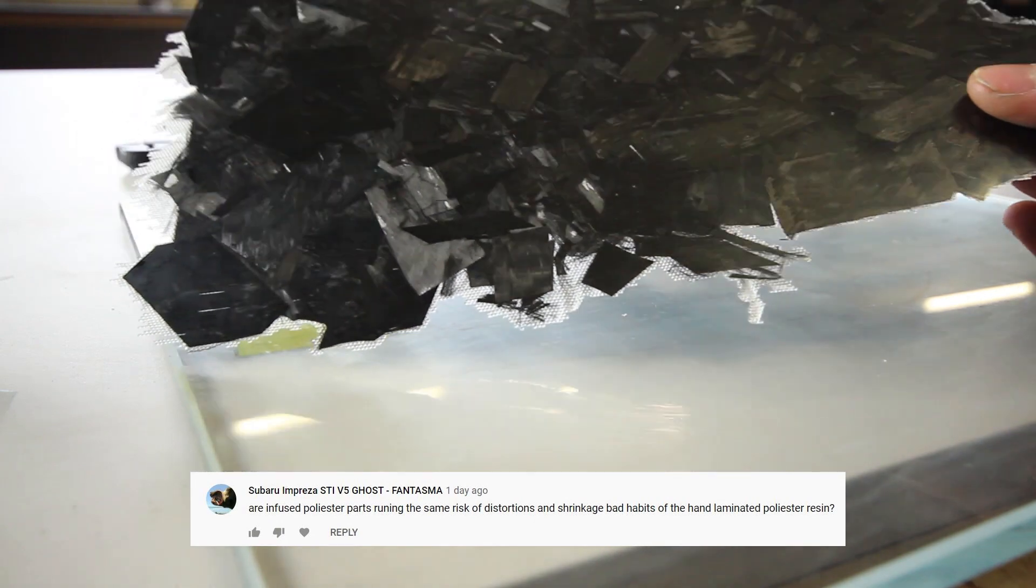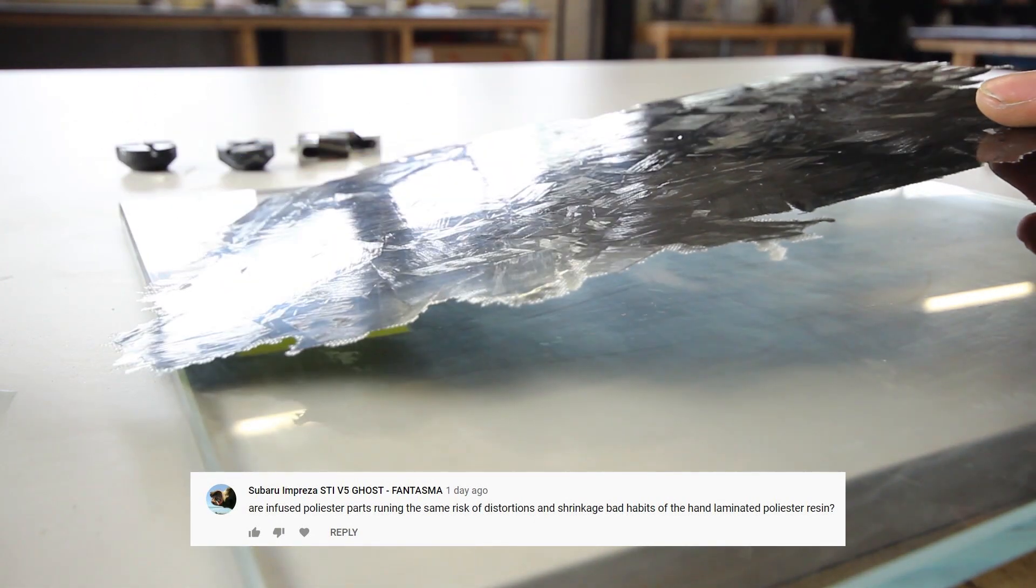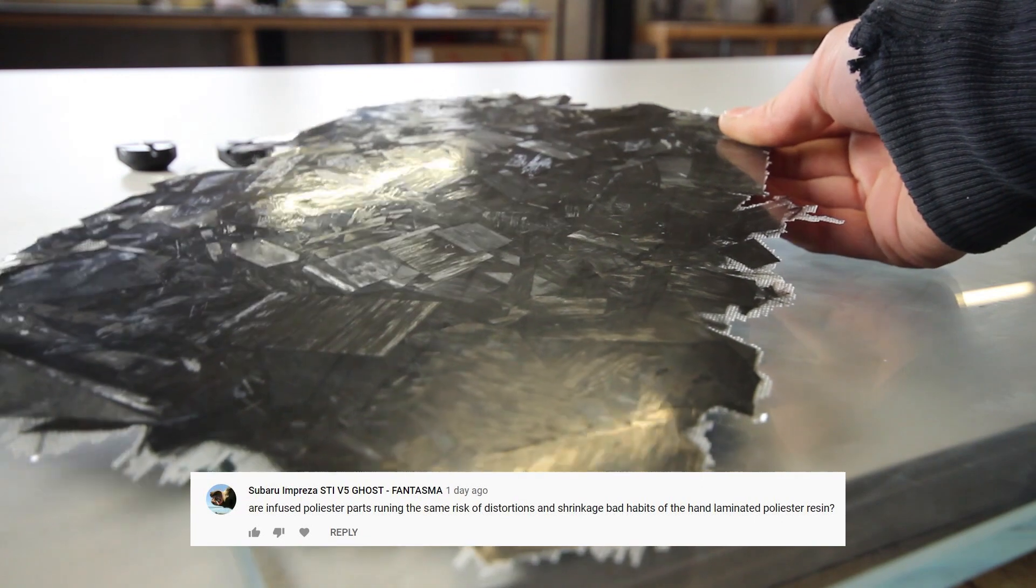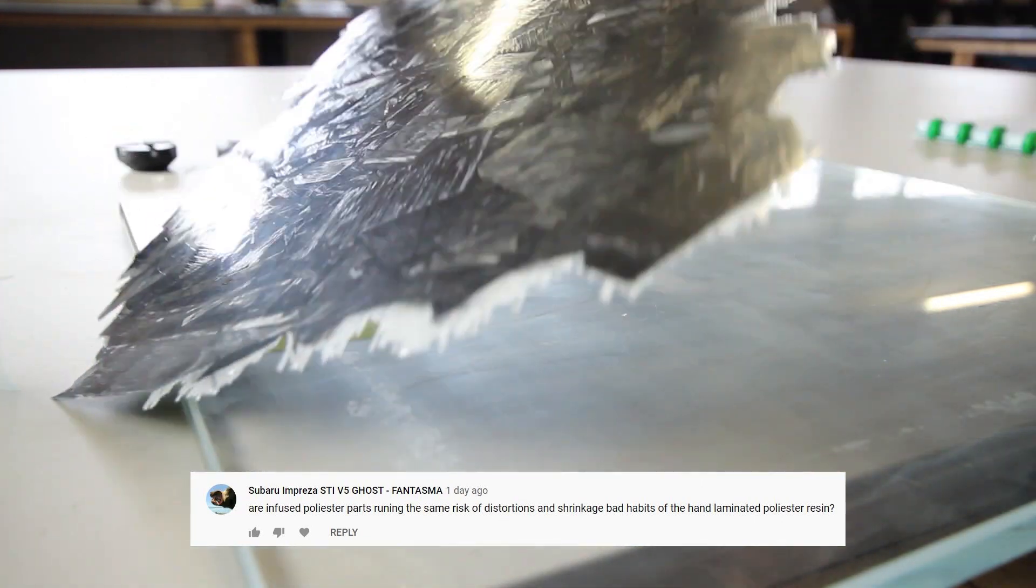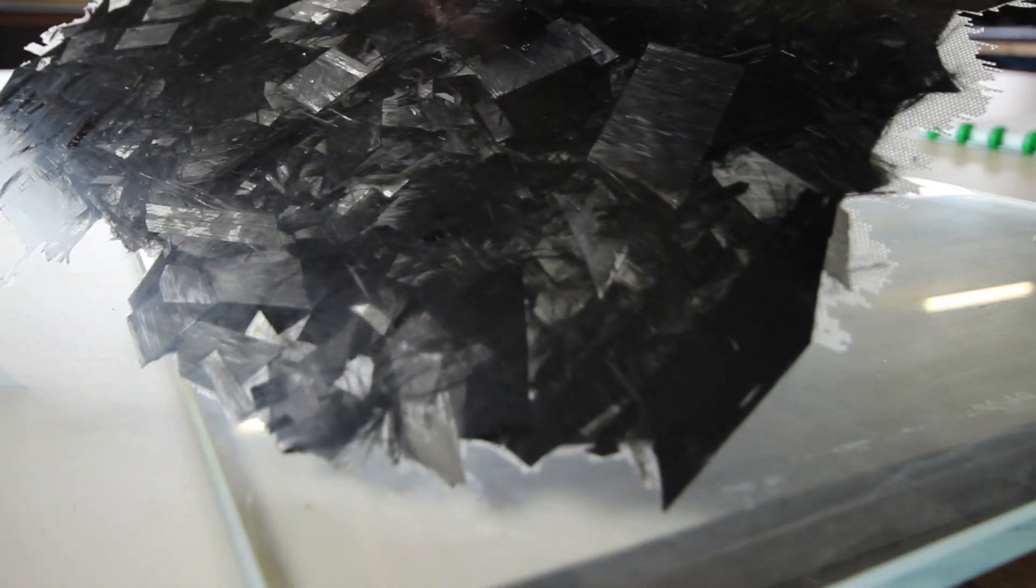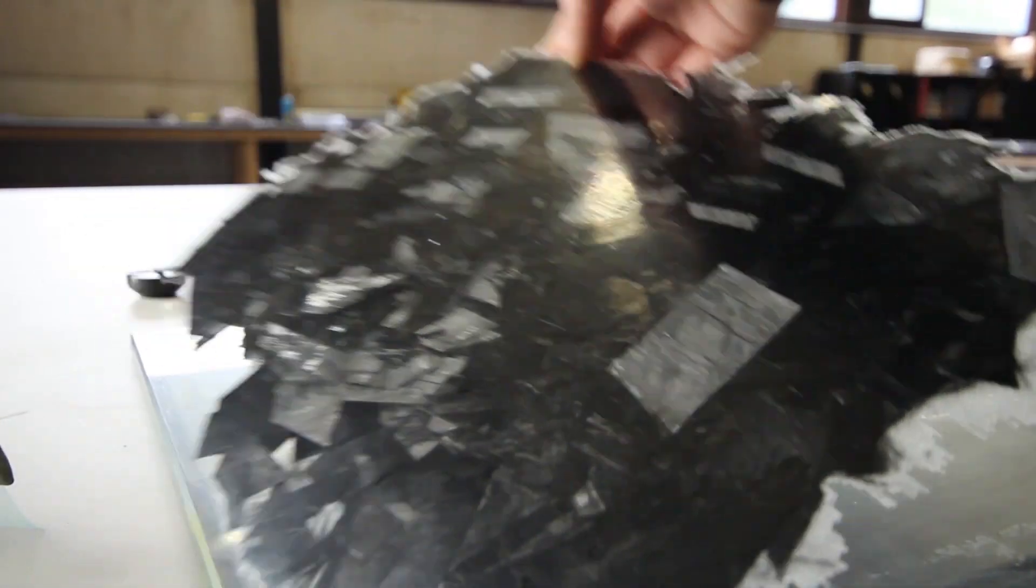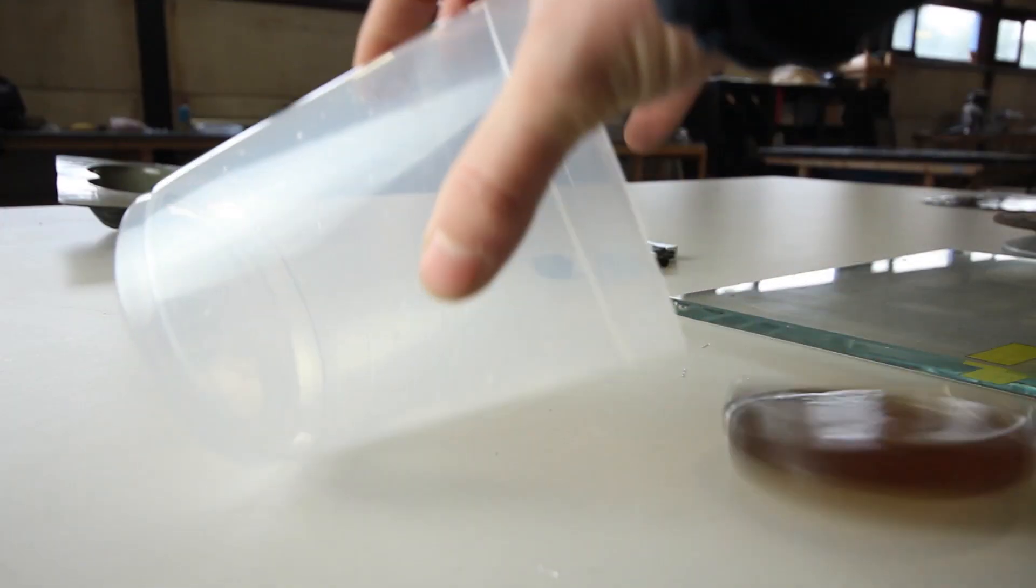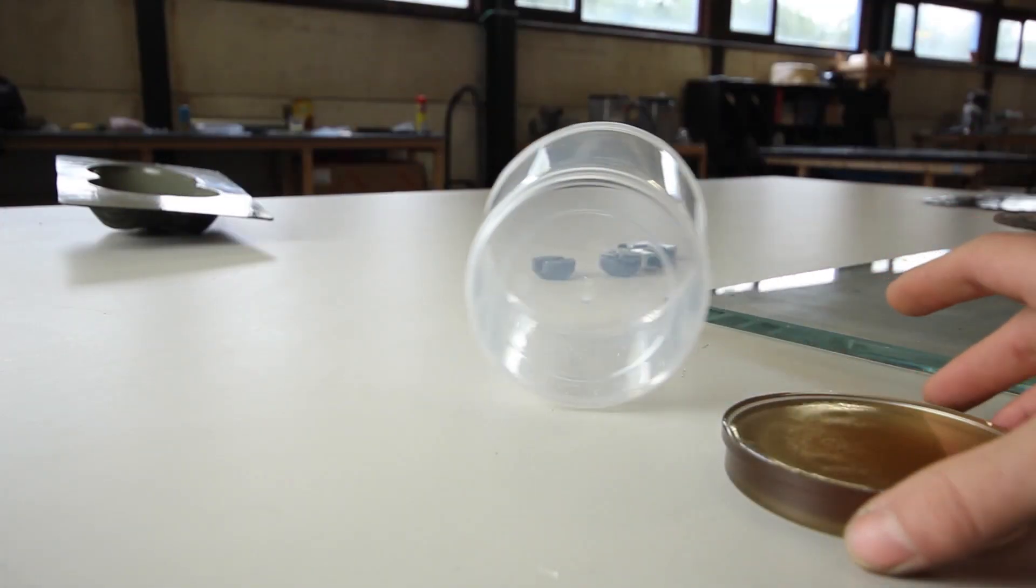Here is the demolding. As you might see, it's not like a perfect surface. I got the question: do infused polyester parts run like a risk to have some distortion? And the answer is yes. Obviously a slower curing epoxy resin will have a better surface finish. Here you can see the leftover in the cup. I was a bit surprised that even with that thickness it didn't go into an exothermal state, so that's good.